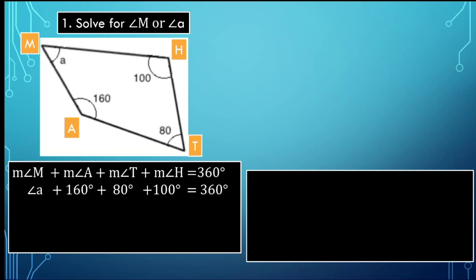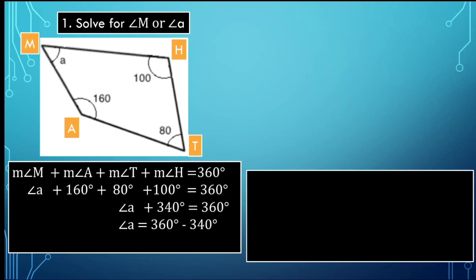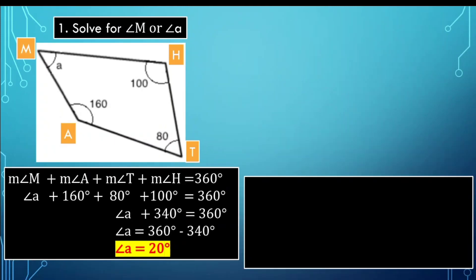Let's combine them together: 160, 80, and 100 gives us 340. So angle M plus 340 equals 360 degrees. Transferring 340 to the other side and applying the subtraction property of equality, that becomes negative 340. Therefore, angle M is equal to 360 degrees minus 340 degrees, a total of 20 degrees. That means the measure of angle M is equal to 20 degrees.